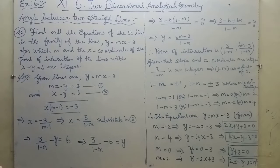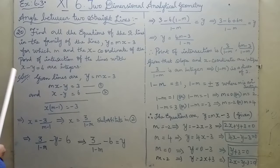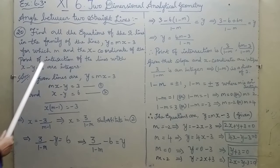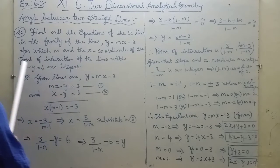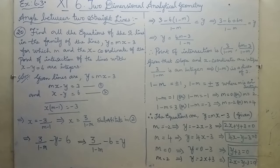We need to find all the equations of the straight lines in the family of lines y = mx - 3, where both m and the x-coordinate of intersection are integers.